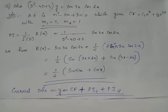Since the roots are real and distinct, the complementary function is obtained as c1·e^x + c2·e^(3x), or equivalently c1·e^(3x) + c2·e^x.